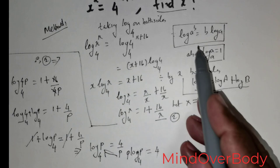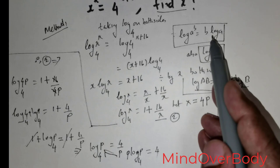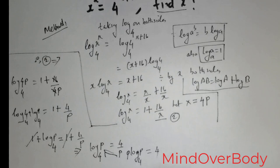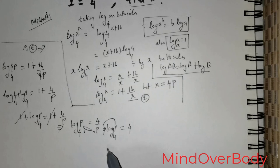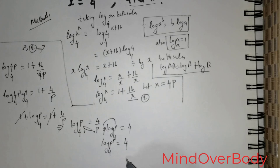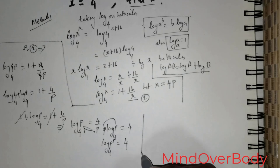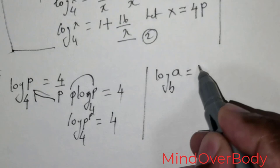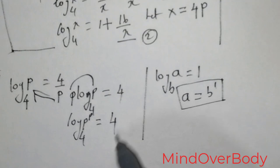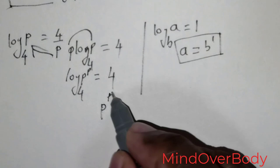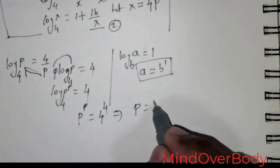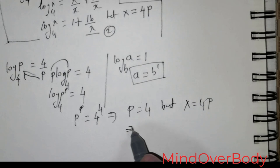Conversely, if I have b times log a I can rewrite it as log a raised to the power b. So p times log p to the base 4 becomes log of p raised to the power p to the base 4 equals 4. Using the formula log a to the base b equals 1 implies a equals b, I get p raised to the power p equals 4 raised to the power 4, which means p equals 4. Since x equals 4p, we get x equals 4 times 4 which equals 16.